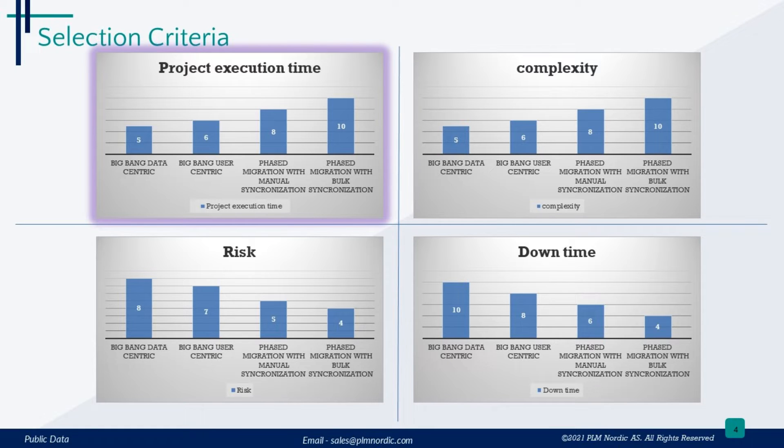When it comes to project execution time, going with the Big Bang data-centric migration gets things done the fastest. On the flip side, if you choose phased migration with bulk synchronization, it's going to take more time because of the added complexities in syncing a lot of data at once.